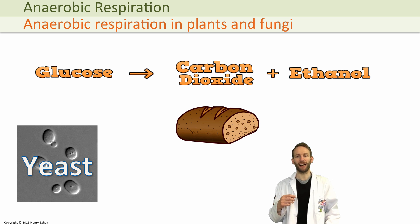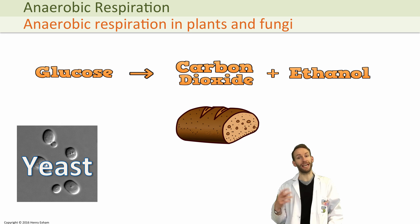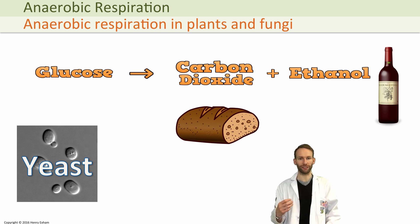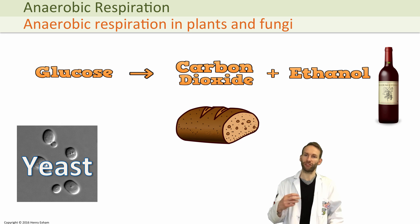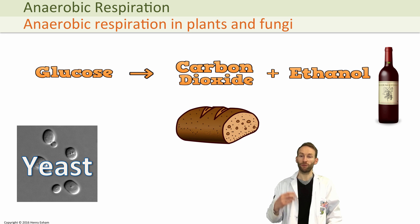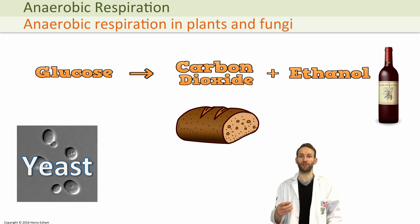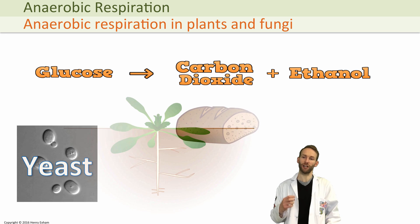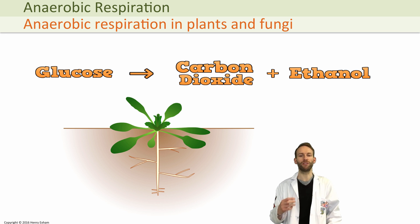In brewing, we can use the ethanol as a waste product to create alcoholic drinks. You use yeast and add sugar — maybe from grapes if you want to make wine, or from malted barley if you want to make beer. Less well known is that fermentation also happens in plants, one example being in root cells of waterlogged plants.